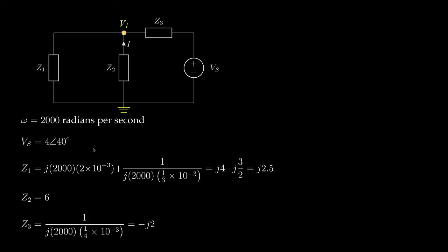Now, for this circuit, I'd like to define the bottom node as ground and then use the node voltage method to solve for the voltage at this top node, which I've labeled as V1.